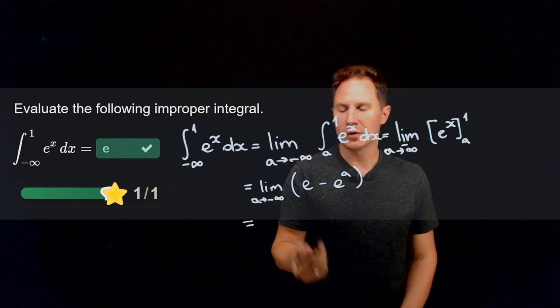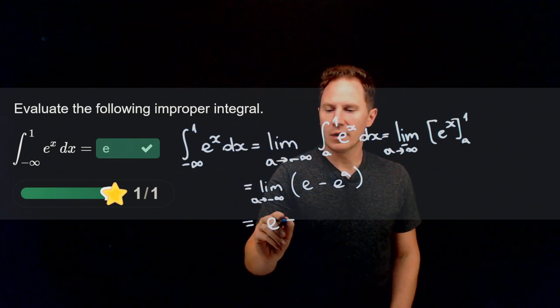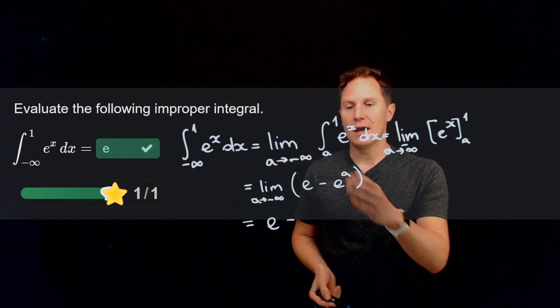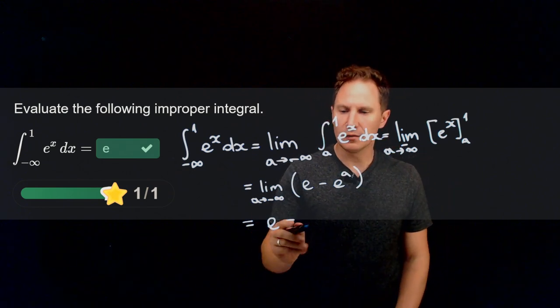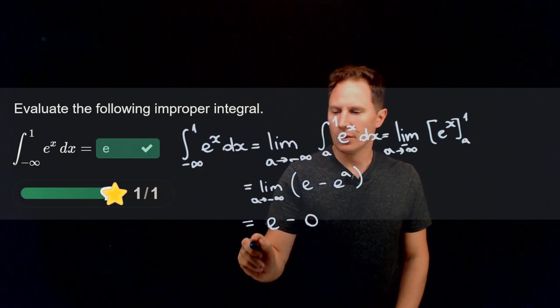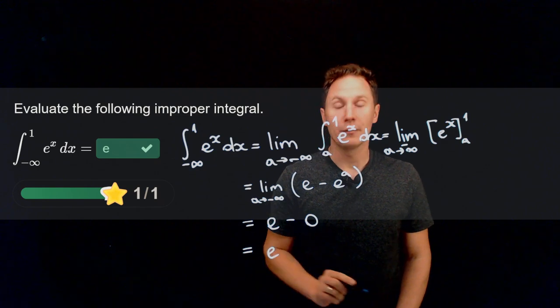This is e to the first power minus e to the a. Well, e to the first power is just a constant e. Whereas the limit of e to the a as a goes to negative infinity is 0. Therefore we get for our answer e.